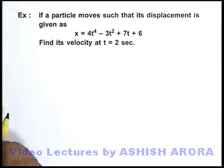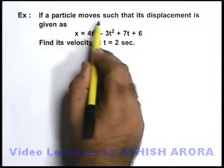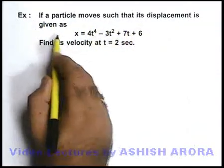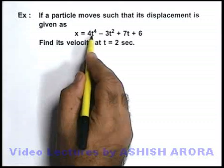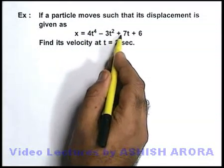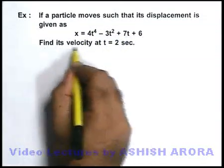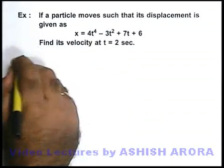In this example, we are asked that if a particle moves such that its displacement is given as x = 4t⁴ - 3t² + 7t + 6, we are required to find the velocity at t = 2 seconds.